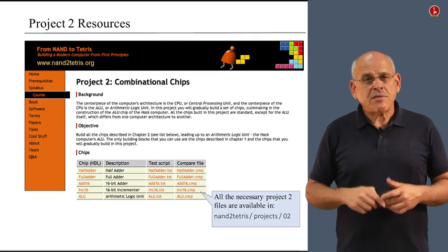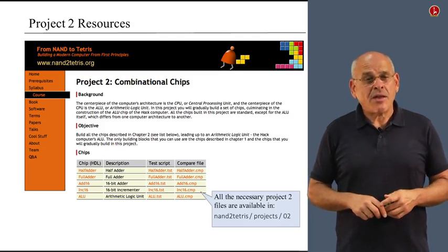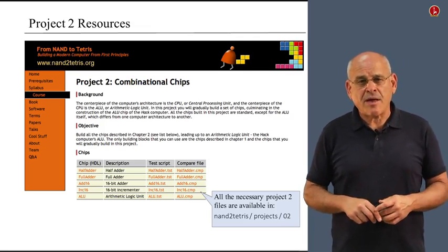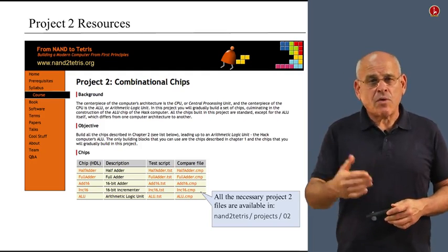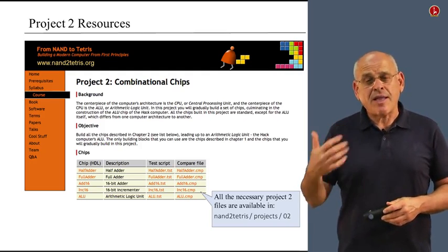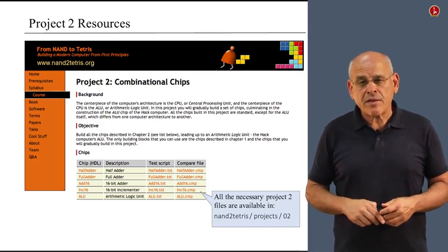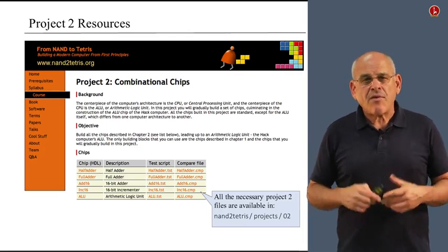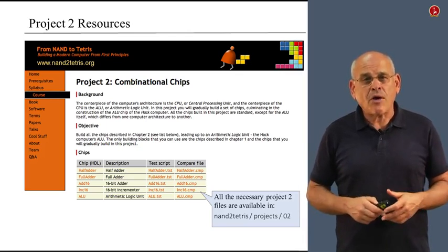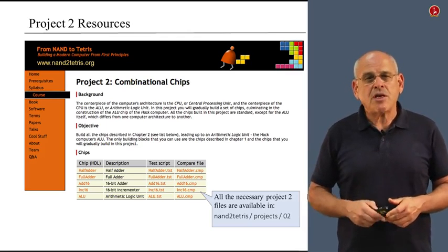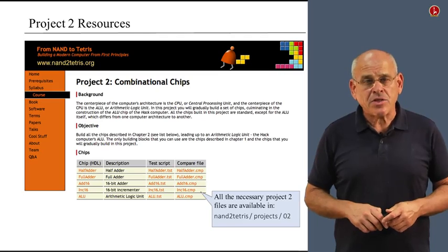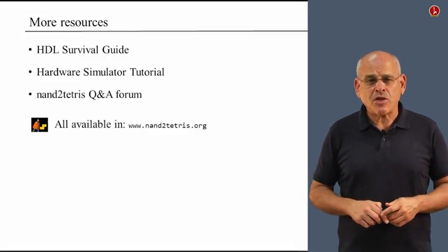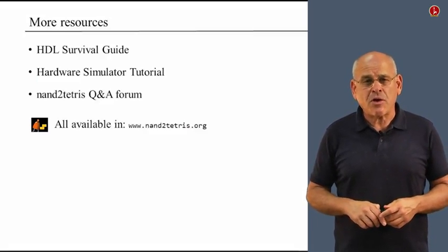In terms of resources, you need to go to the Nand to Tetris website and get the full description of project two. If you have already downloaded the course software suite, there's no need to download anything else. You now have a directory on your computer called 'project/02' which includes all the files necessary for project two. There are a few more resources described in project one which are relevant to this project as well.